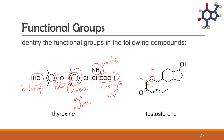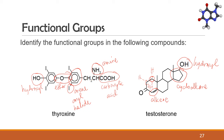Let's move on to testosterone. Testosterone has four functional groups: a hydroxyl group, a cycloalkane, an alkene — where a carbon is double bonded to another carbon — and a ketone, where a carbon is double bonded to oxygen and bonded to two carbon atoms.